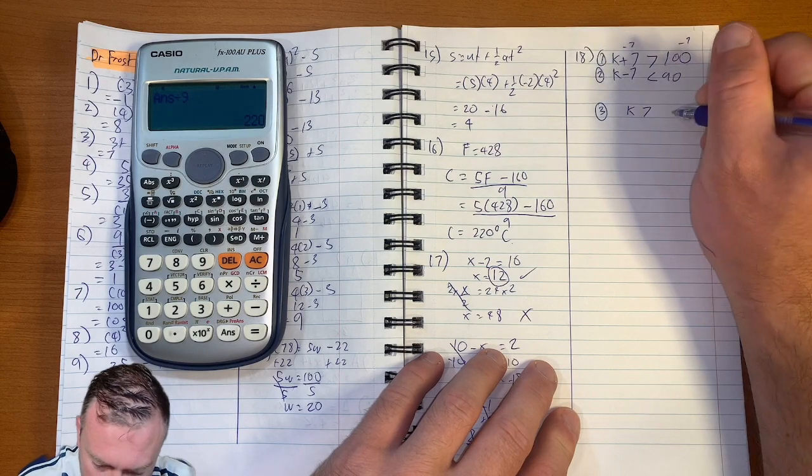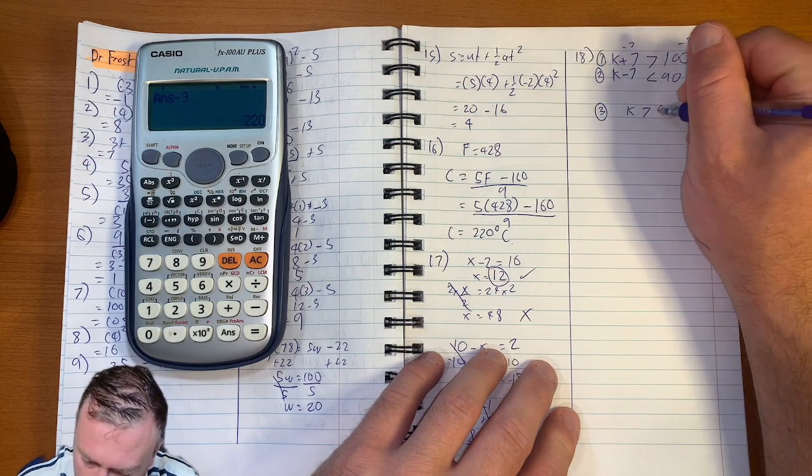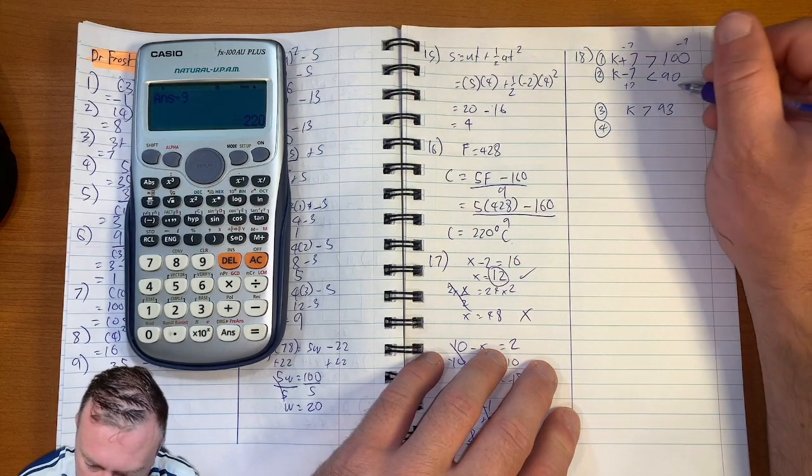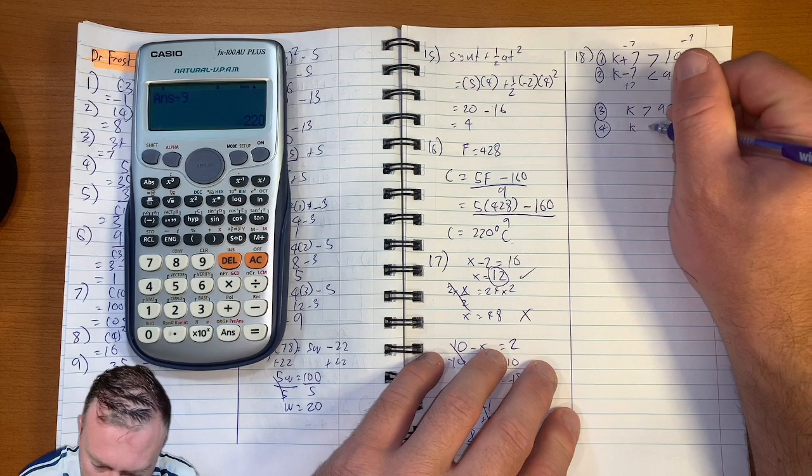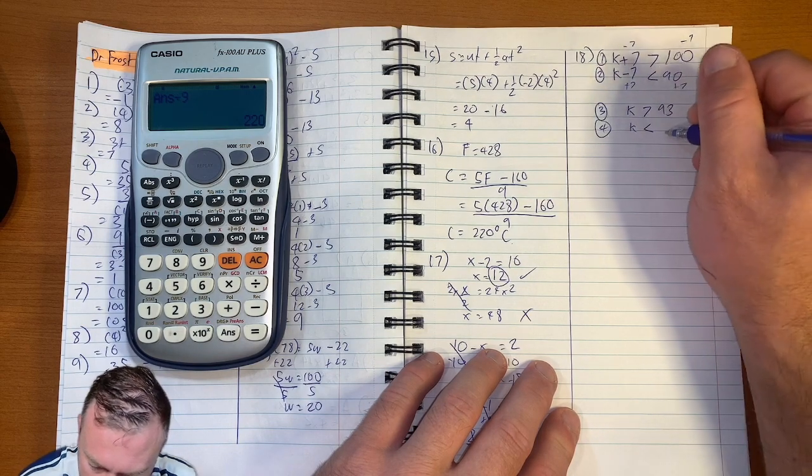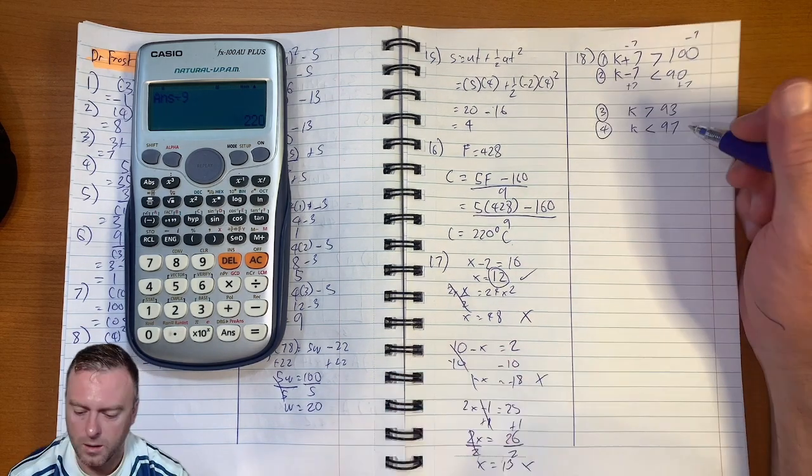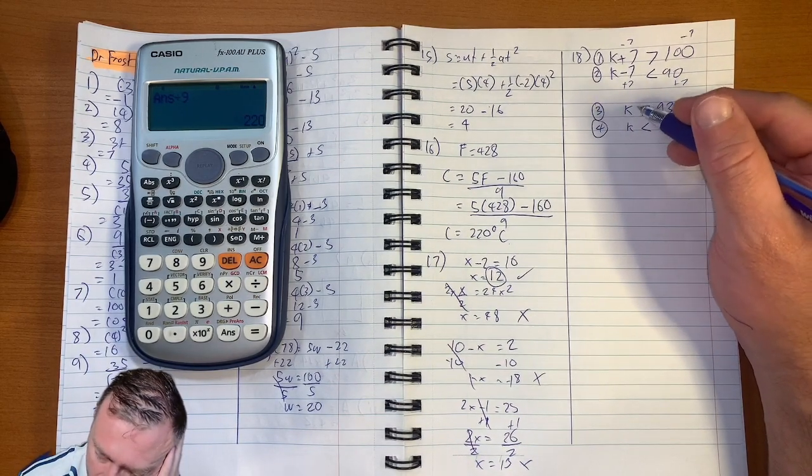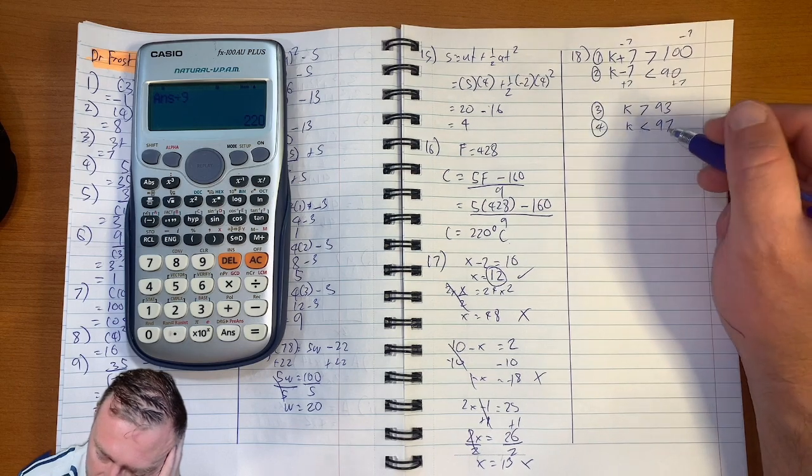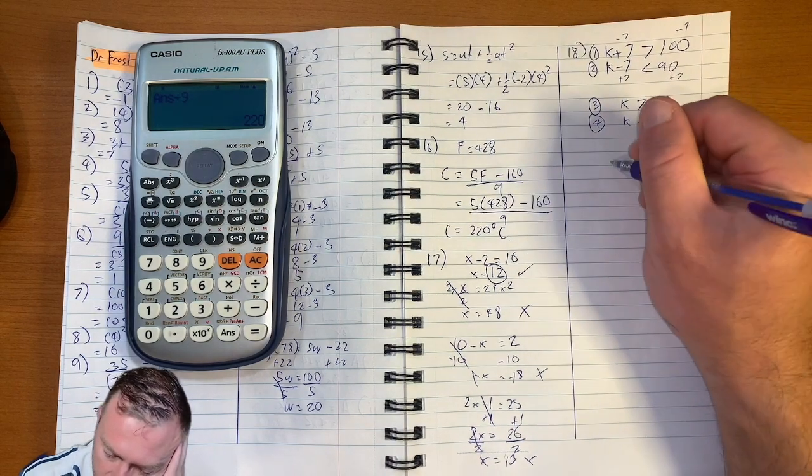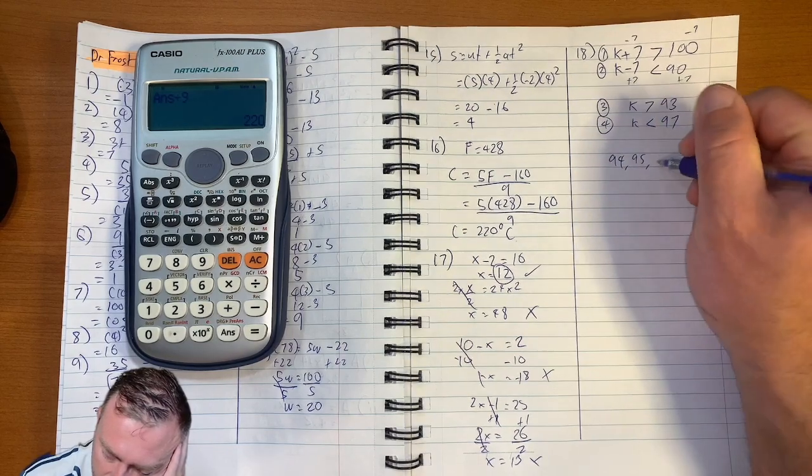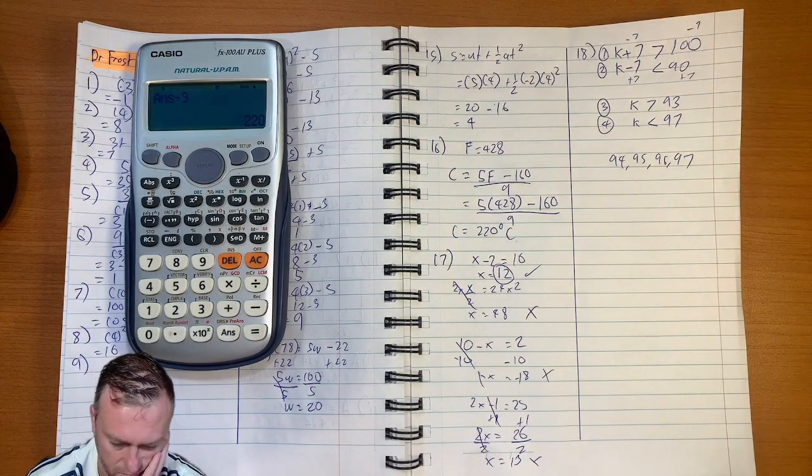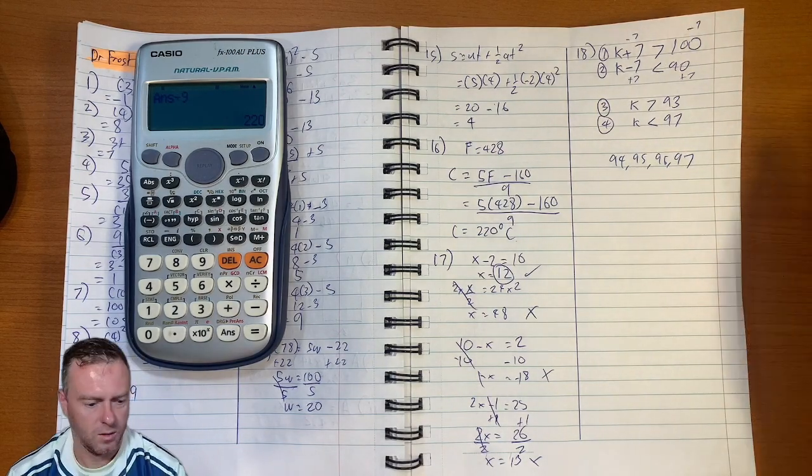K has to be greater than 93. And number 4, plus 7 on both sides. So K has to be less than 97. So it doesn't include. K has to be greater than 93 and K has to be less than 97. So then that would be 94, 95, 96, 97. Cool. Done.